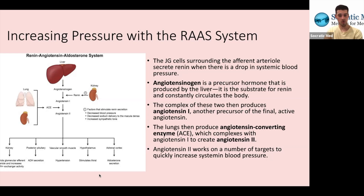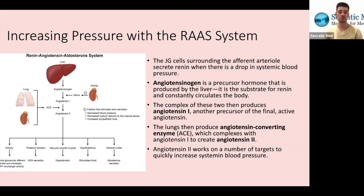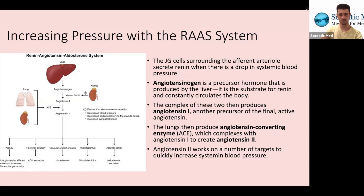Angiotensin-2 increases blood pressure through several mechanisms: in the kidneys, it constricts the glomerular efferent arteriole and increases sodium-hydrogen exchanger activity; it acts on the posterior pituitary to increase ADH secretion, bringing water into the body and increasing blood volume and hydrostatic pressure; it acts on vascular smooth muscle cells lining blood vessels, causing vasoconstriction and hypertension; it stimulates thirst in the hypothalamus, increasing water intake and blood volume; and it acts on the adrenal cortex to secrete aldosterone, increasing solute uptake and water reabsorption. This system acts quickly, making it a fairly acute response.